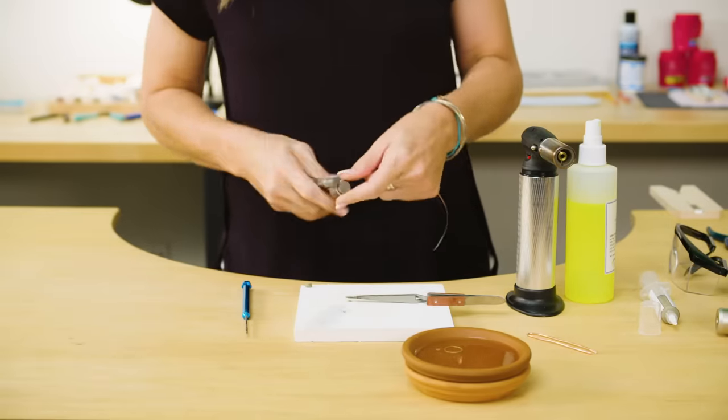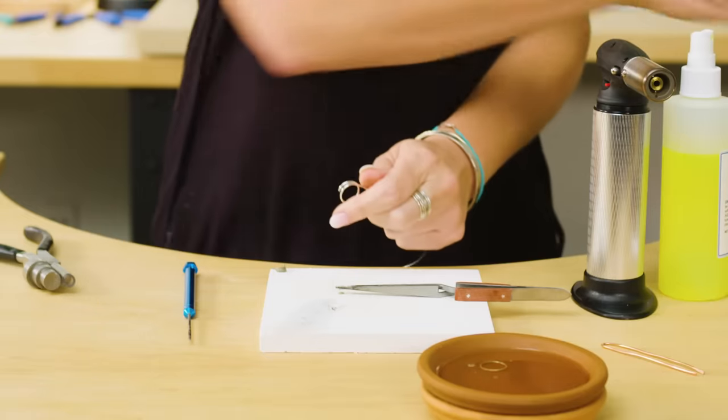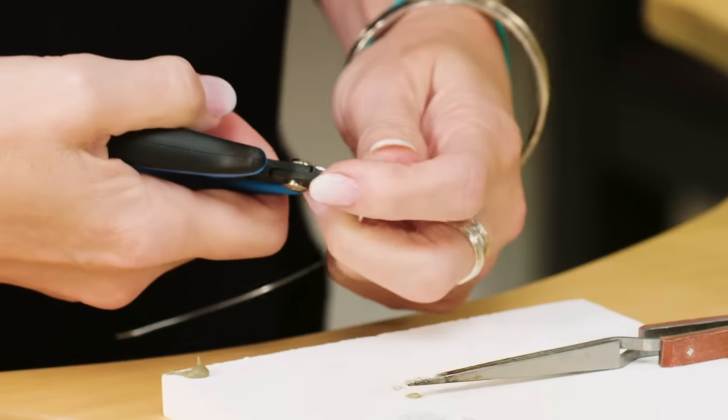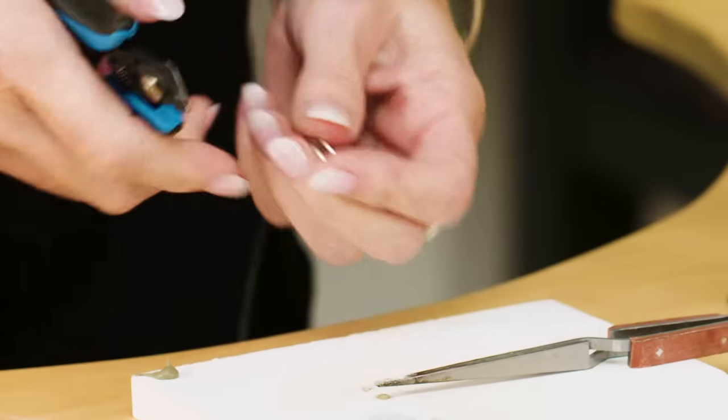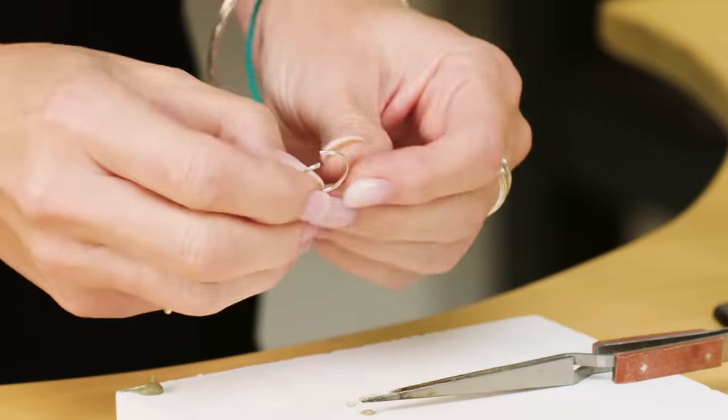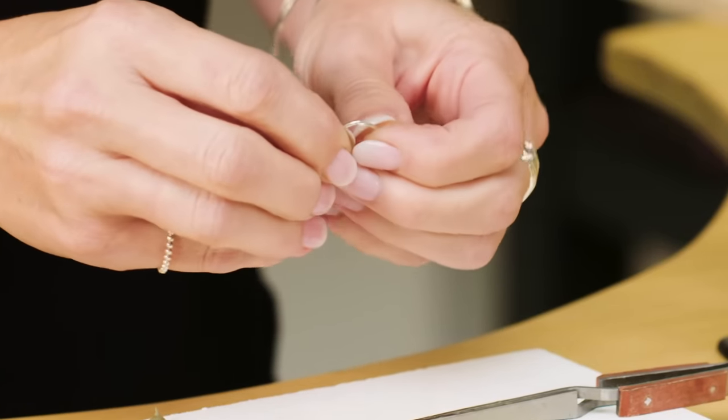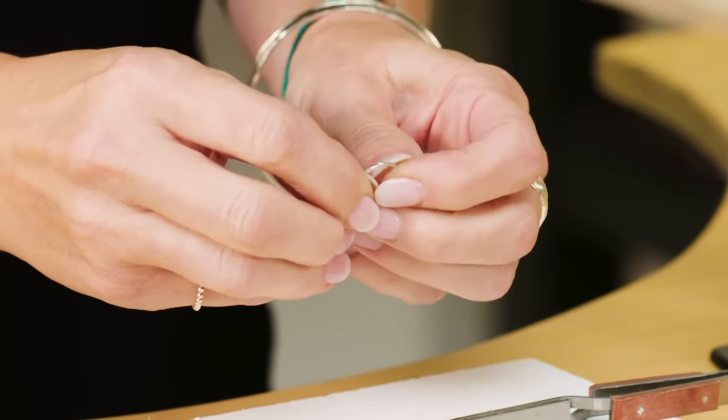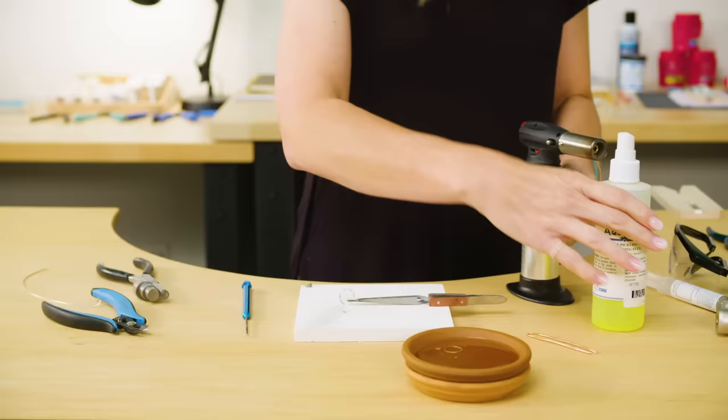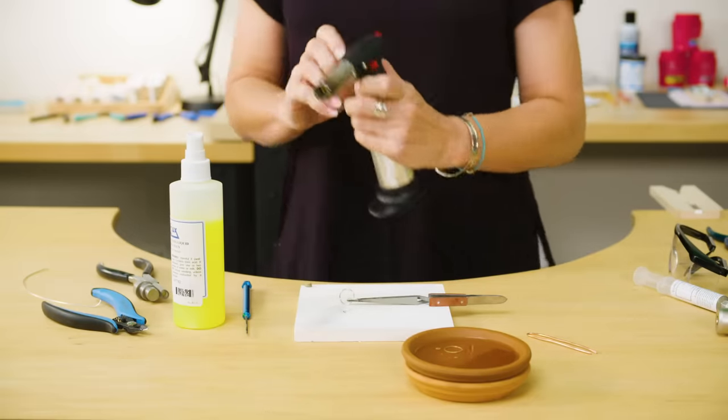Let me do that again so you can really get up close and personal with that. First thing you're going to do is make a ring. Second thing you're going to do is flush cut it. With a flush cutter, make sure that you turn the flush cutter so that both sides are flat and smooth. Then you're going to make sure that your joint is really, really tight, and pop that back inside your cross-lock tweezer.